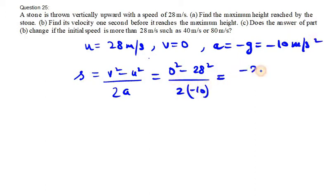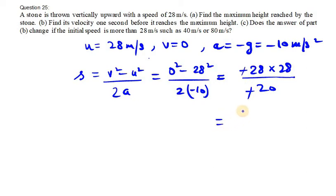So it will be minus 28 times 28 over minus 20. We can cancel the two negatives, and when you solve this, you get 39.2 meters.